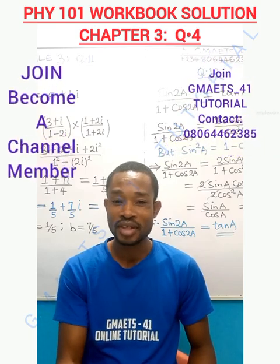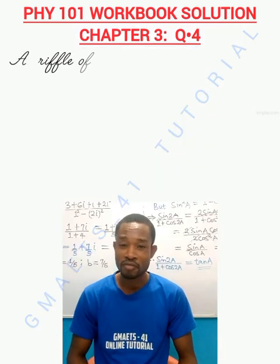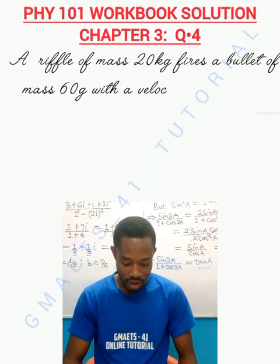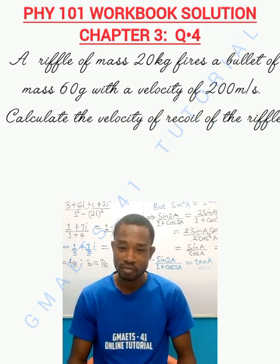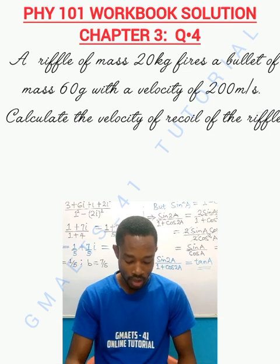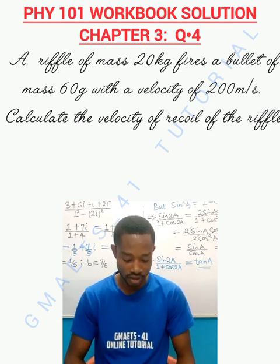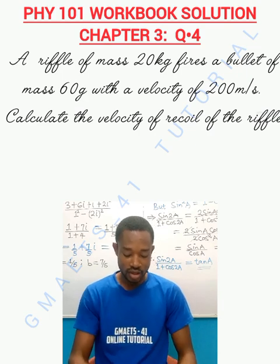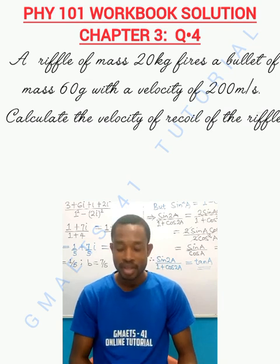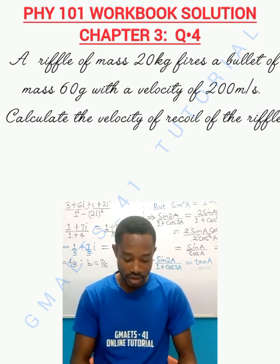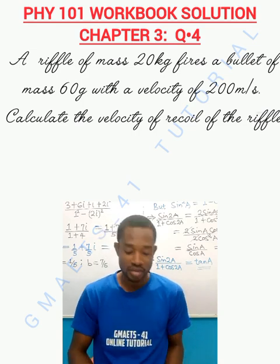The question reads: A rifle of mass 20 kilograms fires a bullet of mass 60 grams with a velocity of 200 meters per second. Calculate the velocity of recoil of that rifle. Your examiner is asking you to find the velocity of recoil of the rifle.